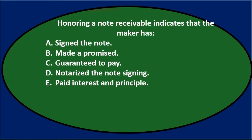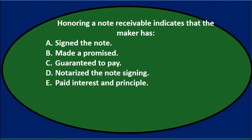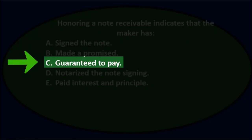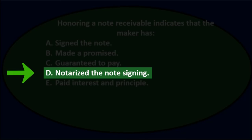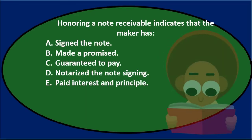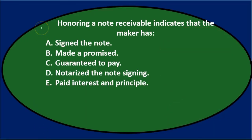Next question: honoring a note receivable indicates that the maker has — A) signed the note, B) made a promise, C) guaranteed to pay, D) notarized the note, E) paid interest and principal.